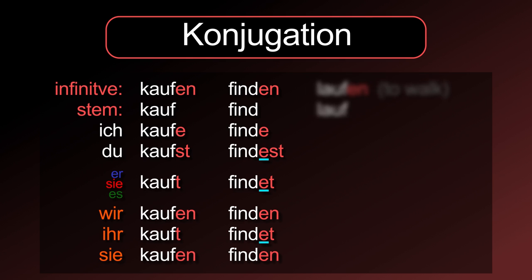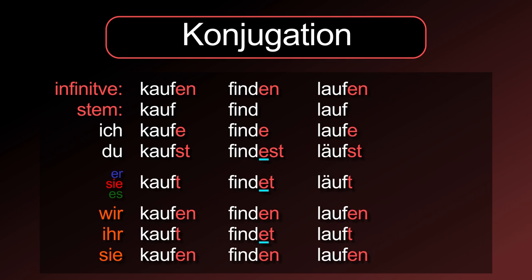Many verbs, like laufen for example, will also change their stem when conjugating them. That means the pattern for the conjugation endings still applies, but a vowel in the stem of the second and third person singular will change: ich laufe, du läufst, er/sie/es läuft, wir laufen, ihr lauft, sie laufen.